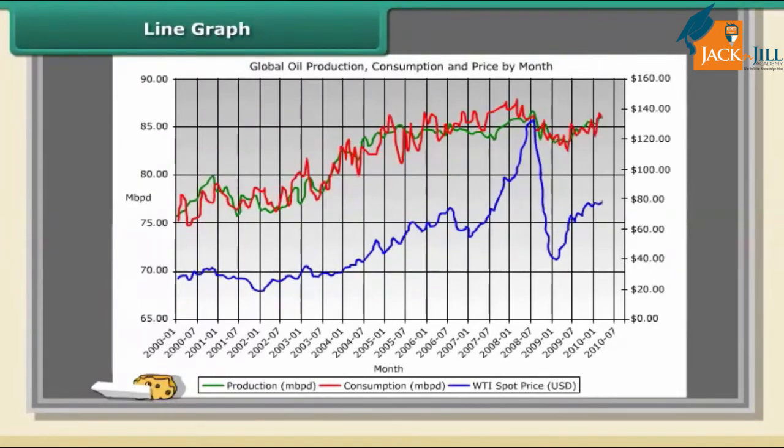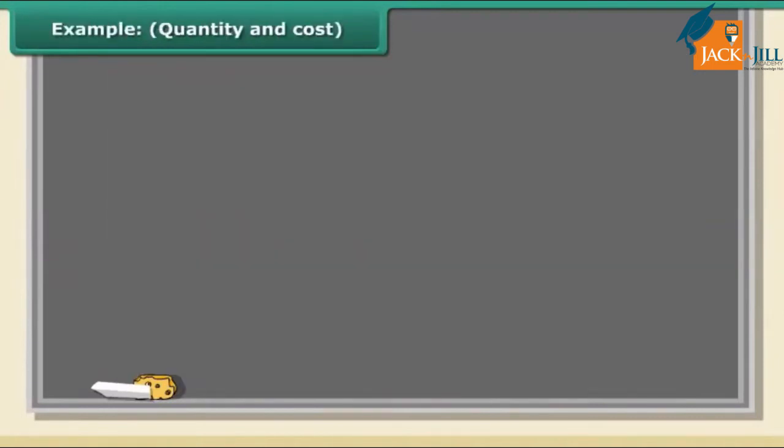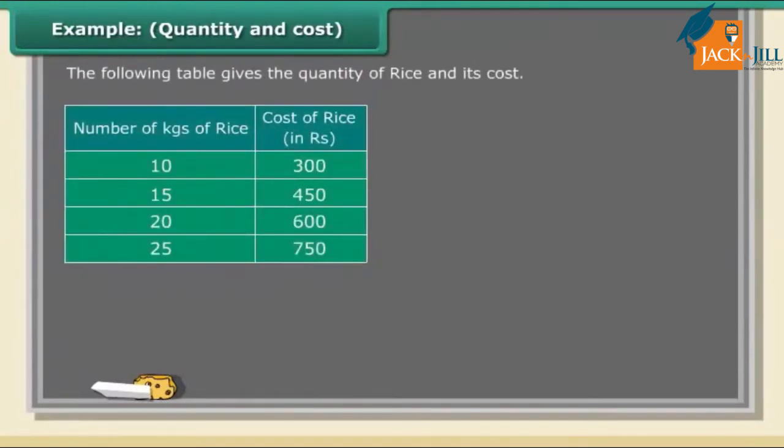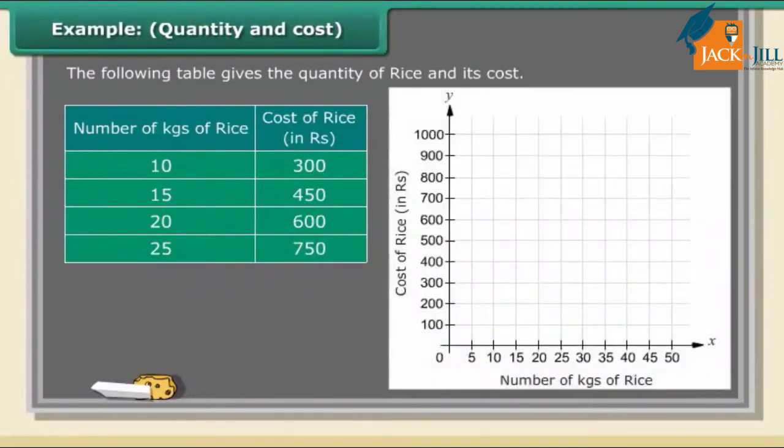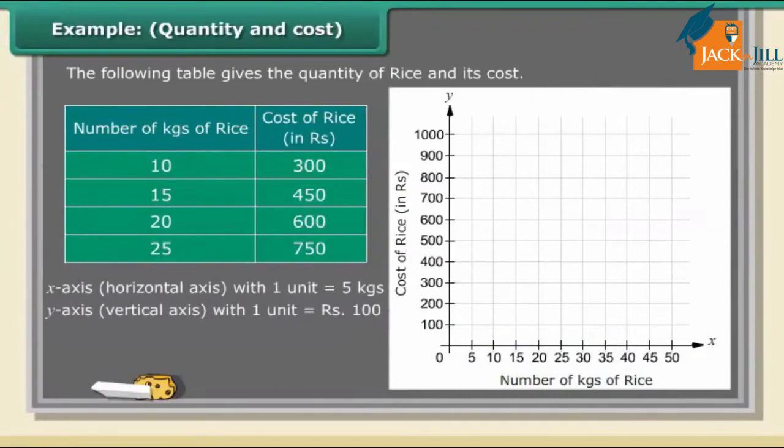Example - quantity and cost: The following table gives the quantity of rice and its cost. Plot a graph to show the data. Step 1: Mark the number of kgs of rice on the x-axis (horizontal axis) with 1 unit equal to 5 kgs. Step 2: Mark the cost of rice on the y-axis (vertical axis) with 1 unit equal to rupees 100. Step 3: Plot the points (10,300), (15,450), (20,600), (25,750).